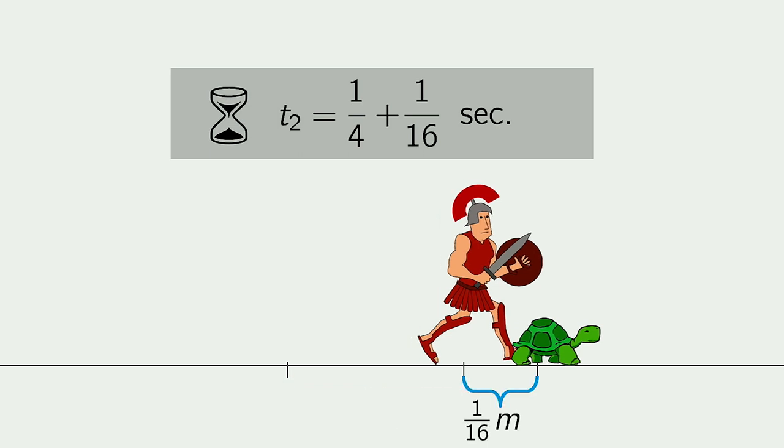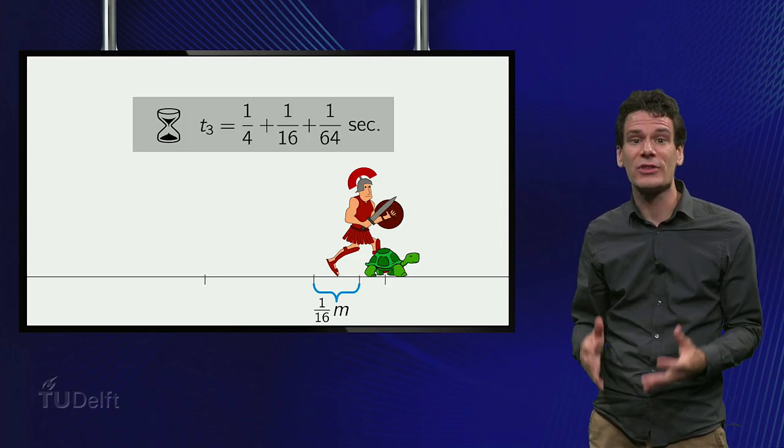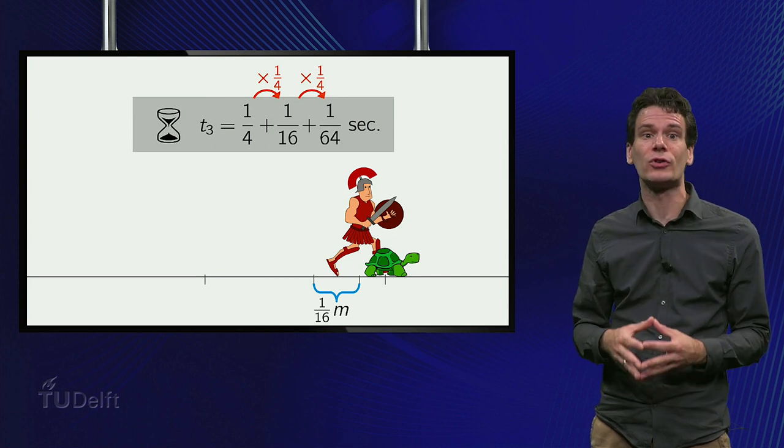Achilles runs this distance in 1 sixteenth of a second, and the tortoise will have moved again, etc. In fact, each step in the process lasts 4 times shorter than the previous step.